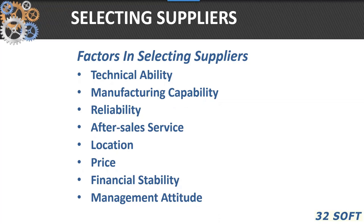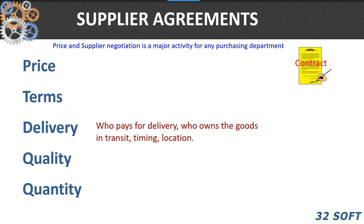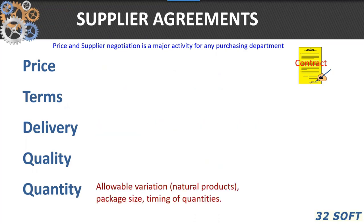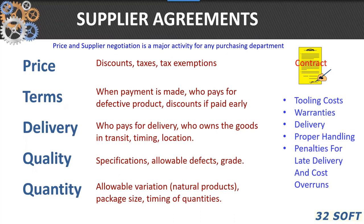Suppliers are very important to your purchasing activity. You want to look at their technical and manufacturing capabilities — are they reliable, can they ship on time, do they have after-service, where are they located in terms of freight pricing, etc.? Once you've defined the suppliers, you want to enter into a supplier agreement — a contract that defines pricing, terms, delivery, quality, and quantity. There are other factors involved in supplier agreements such as tooling costs, warranties, delivery, proper handling, and penalties.